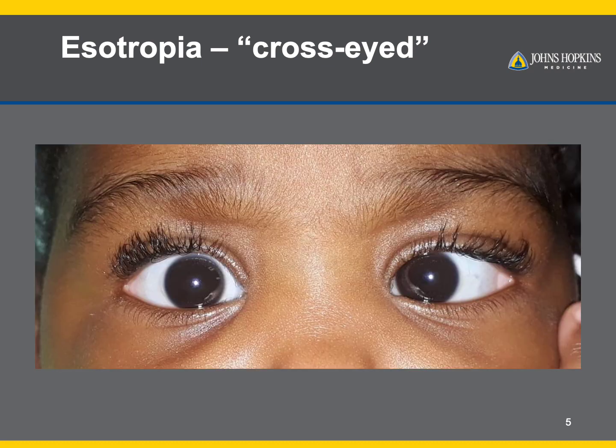Notice here the asymmetry in the light reflection, although this is very slight. This is sufficient enough for a child to turn off the eye and result in a poorly formed brain-eye connection, in this case in the left eye, especially if it happens frequently enough throughout the day.